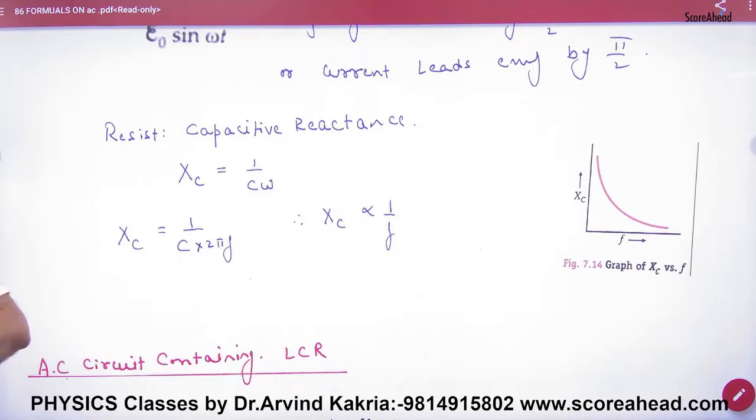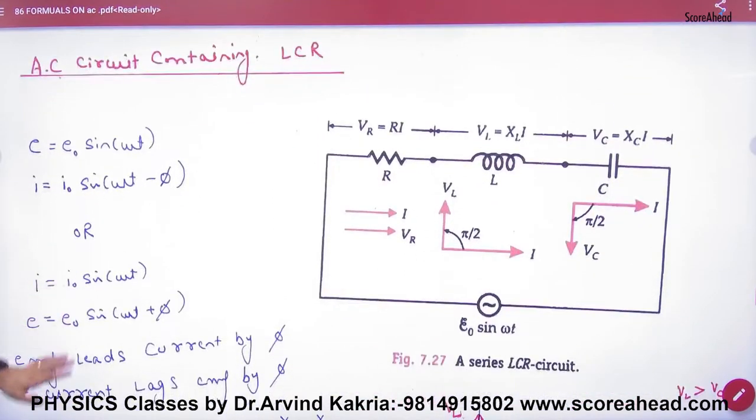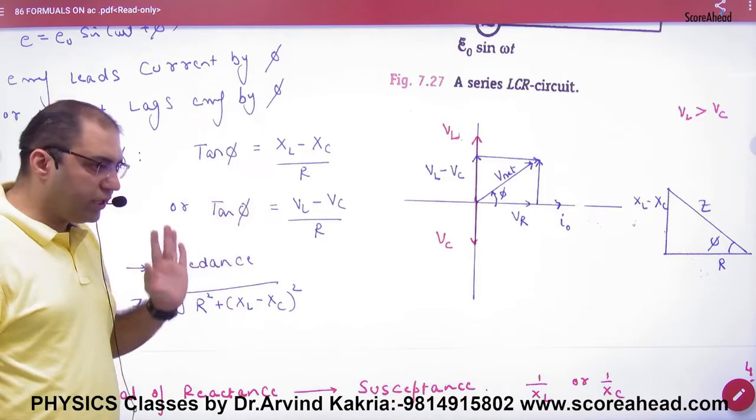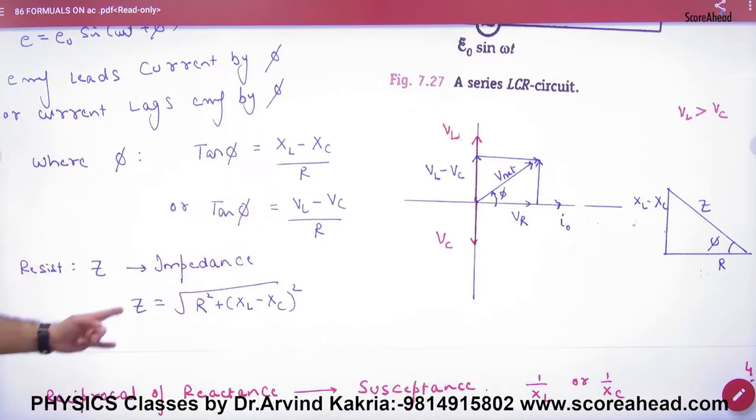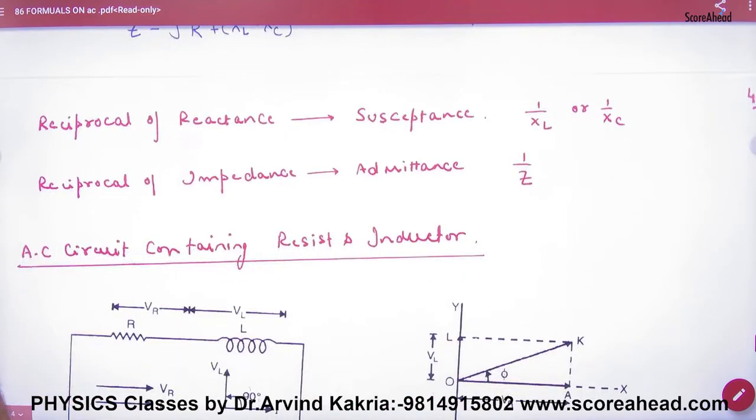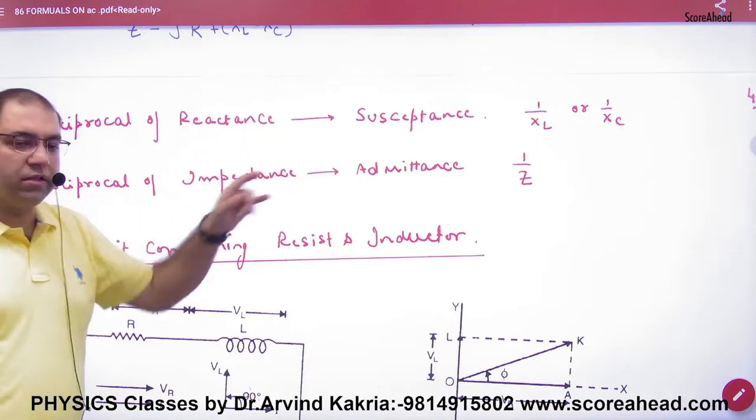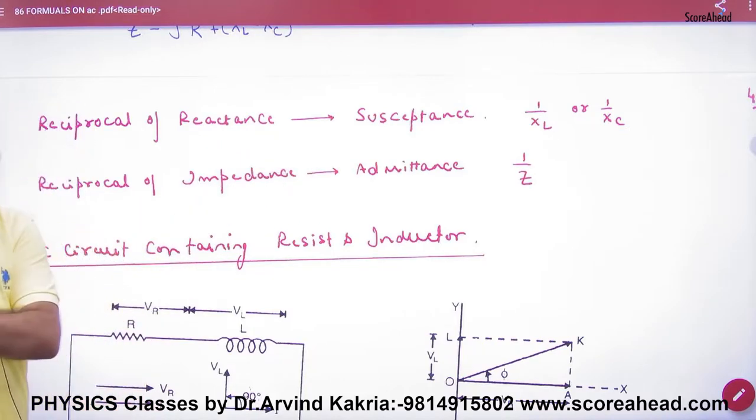So this graph will become this. Then what did we do? LCR. We discussed it in LCR. We learned to make the equation. In LCR, we learned tan phi. Look at tan phi. Look at the net voltage. Look at the impedance triangle. And the impedance. Then what did we do? Reciprocal of reactance is known as susceptance. And the impedance is admittance.